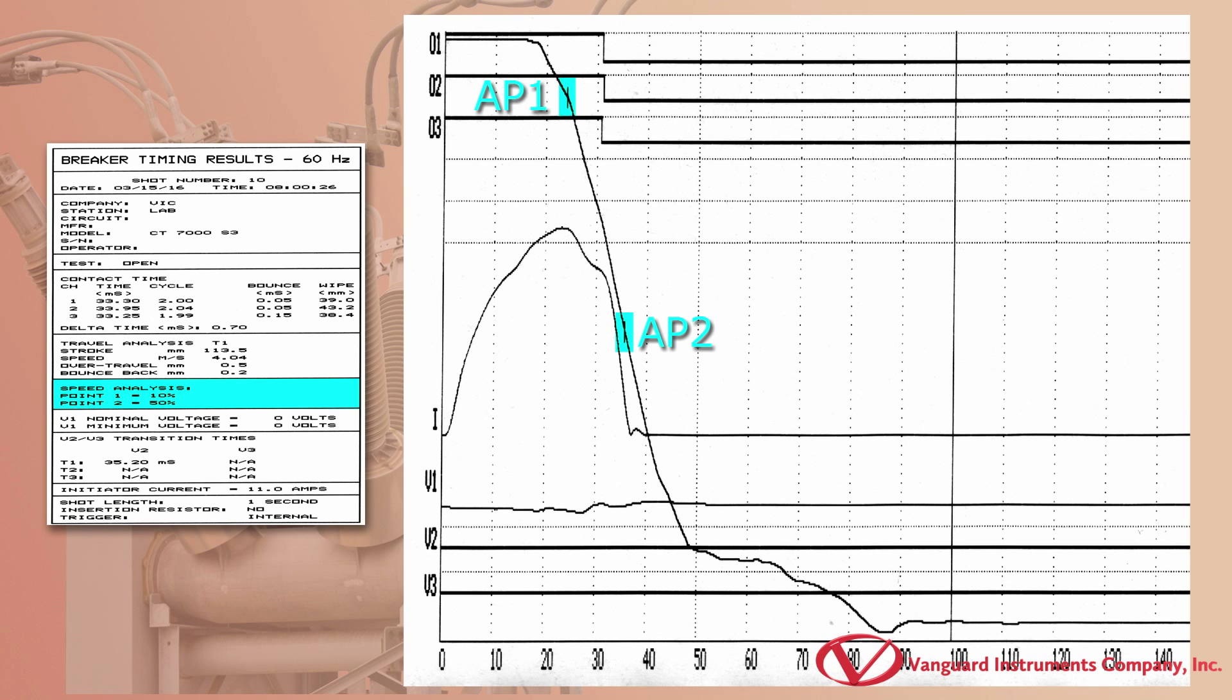The AP2 in this case is the distance that is 50% of the stroke and measured from the fully closed position.